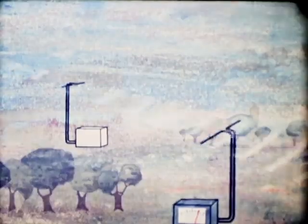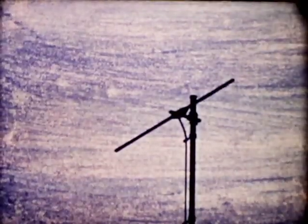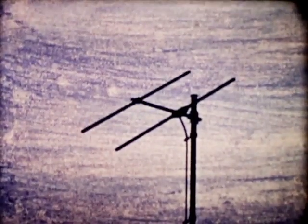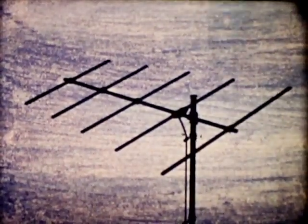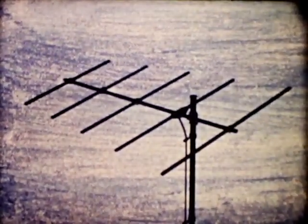To increase the directional effect of the receiving aerial, it is usual to add a few shorter rods at the front, and a somewhat longer rod to act as a reflector at the back. Moreover, for practical reasons, the dipole itself is generally in the form of a rod folded double.